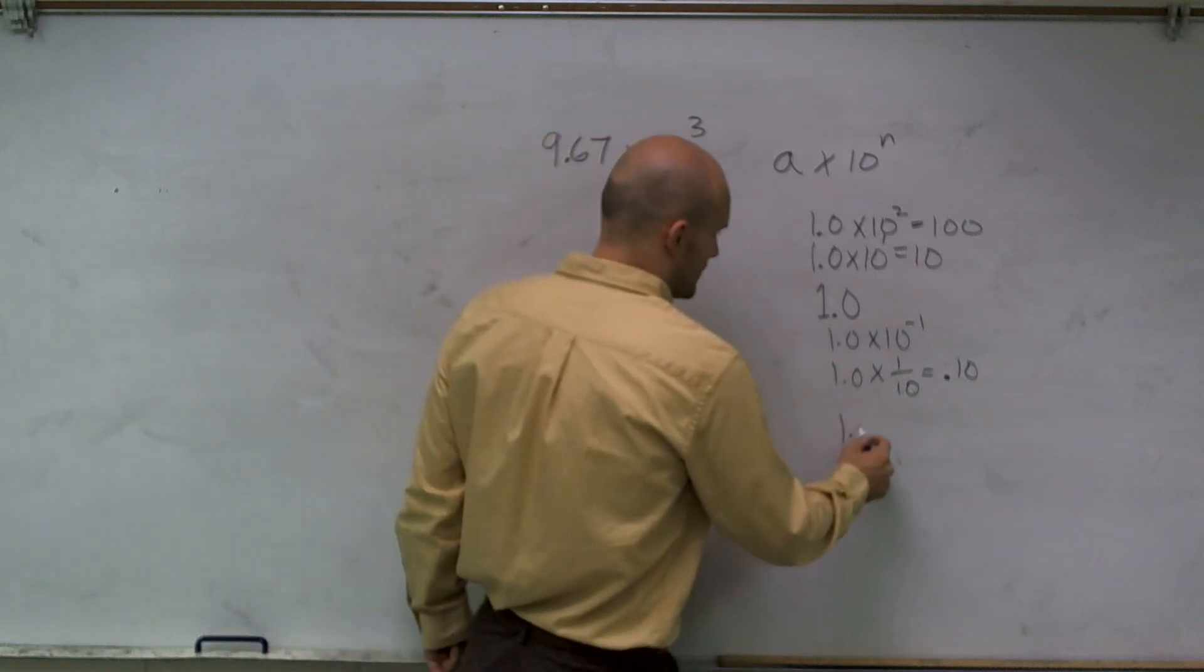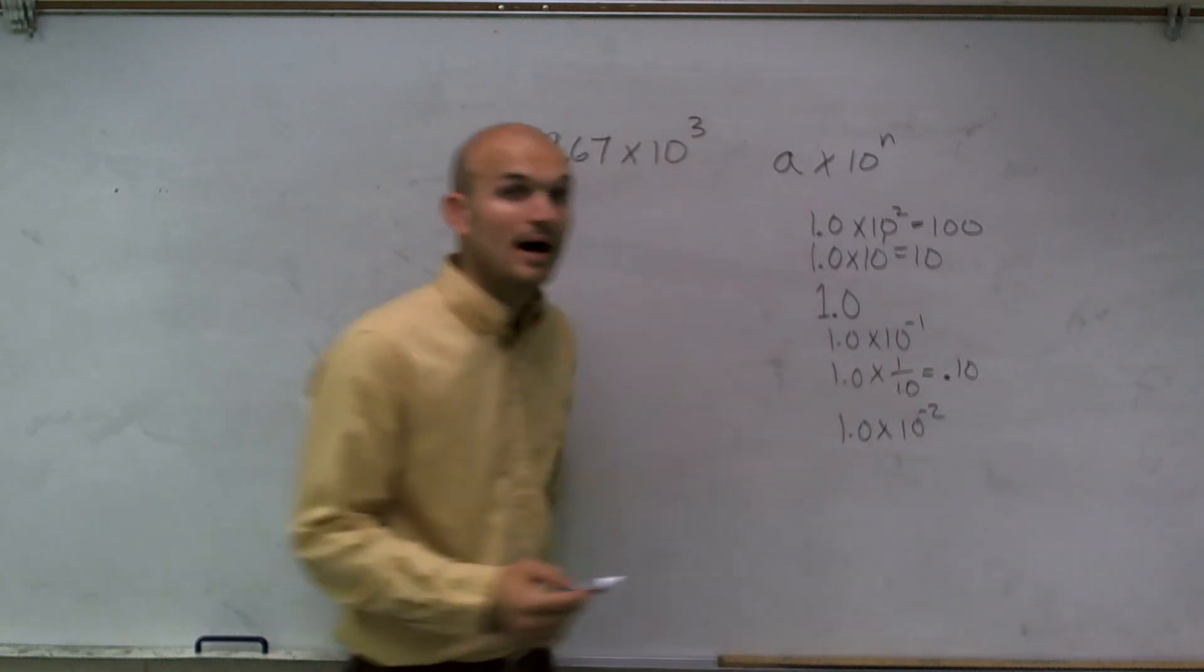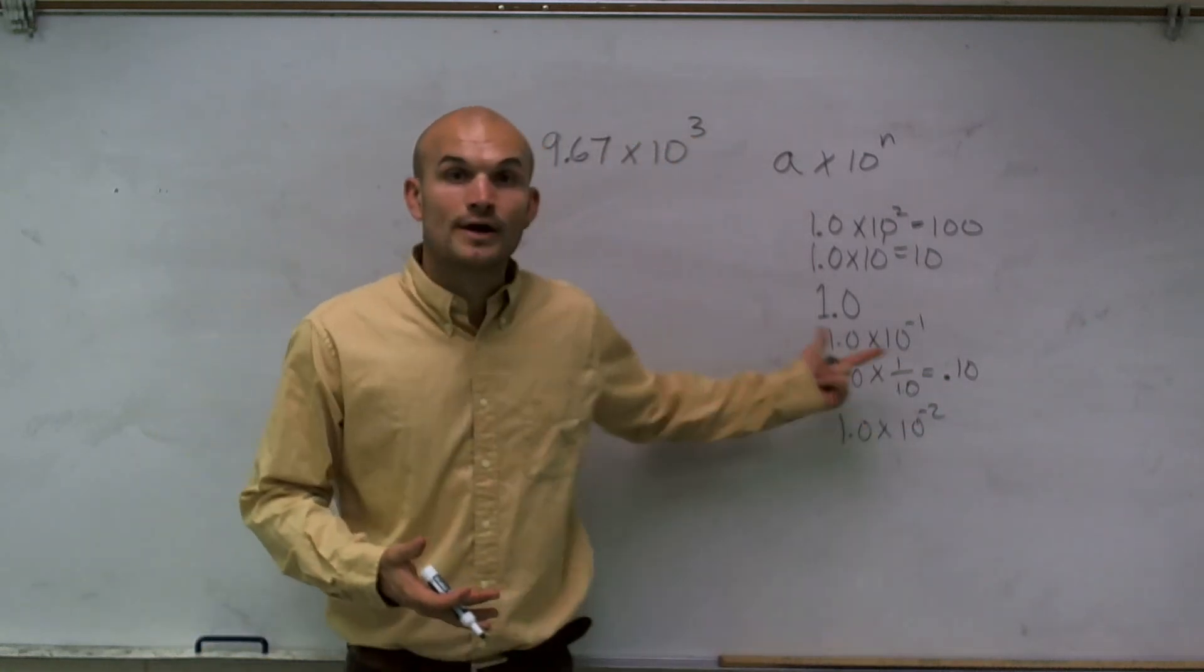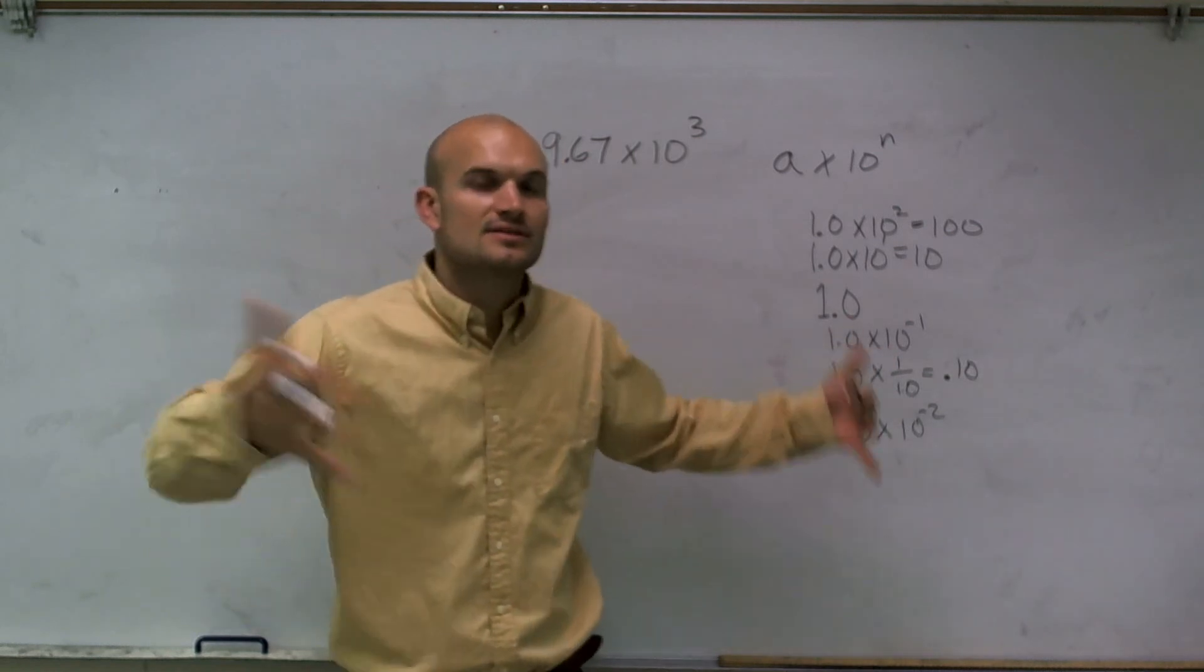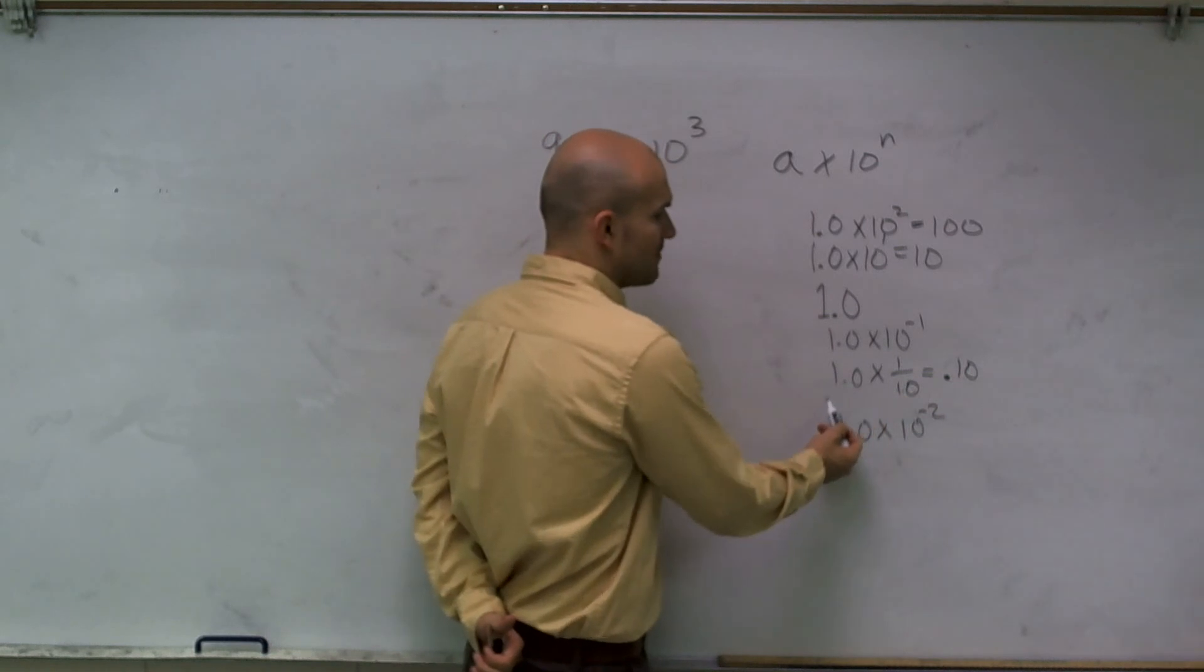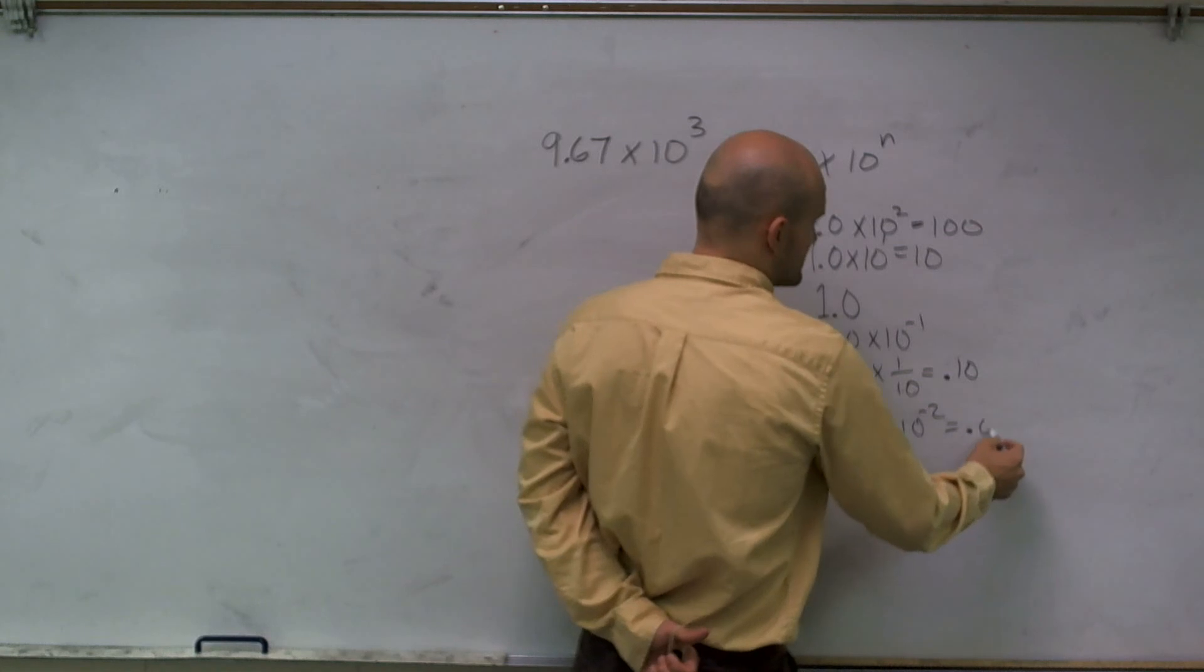And very similar, if I was going to take 1.0 times 10 to the negative second power, I'm going to be doing the exact same thing. I'm going to multiply it by 1 over 100, or the same thing as just dividing by 100, which is going to move my decimal point over two spots. So therefore, my answer now is going to be 0.01.